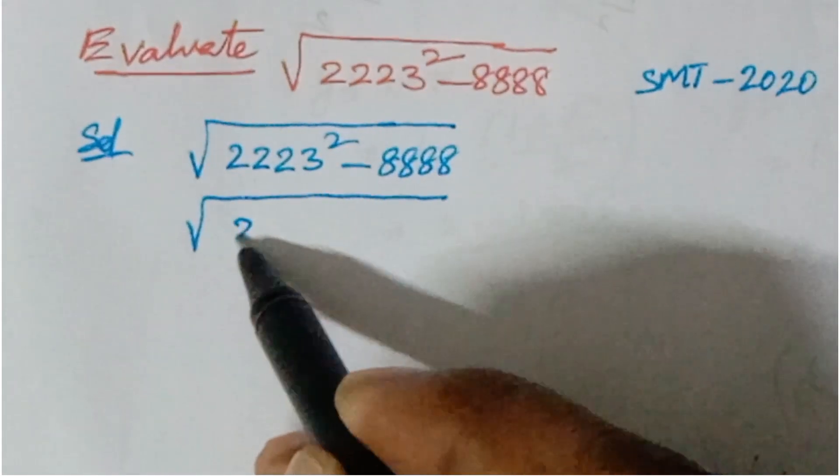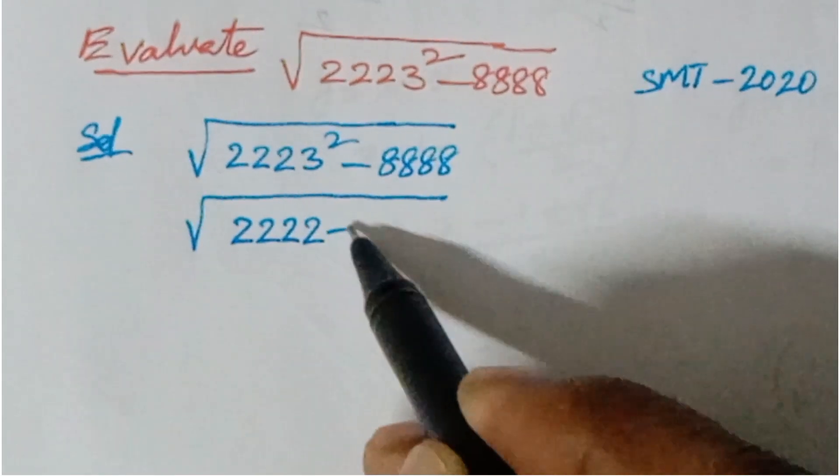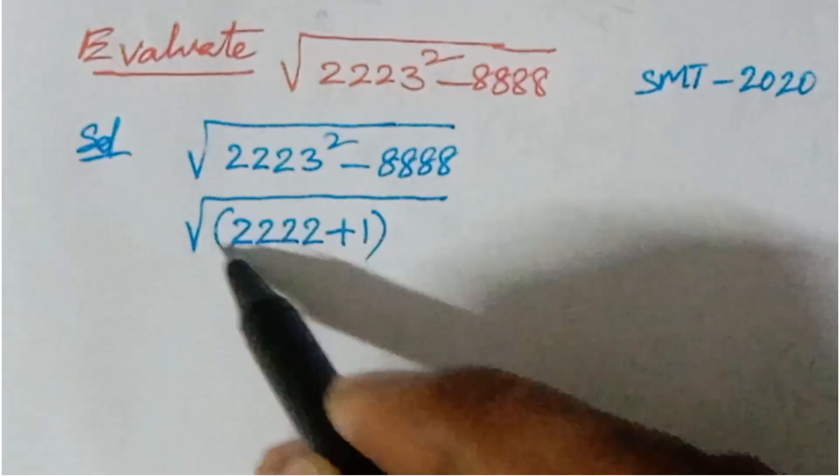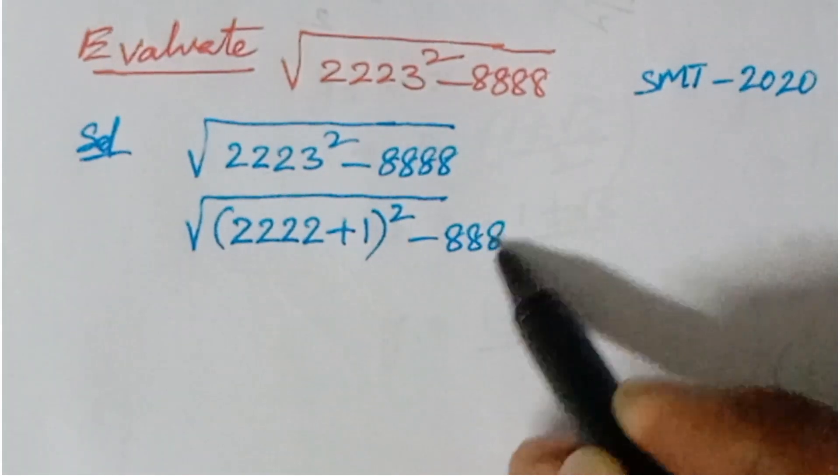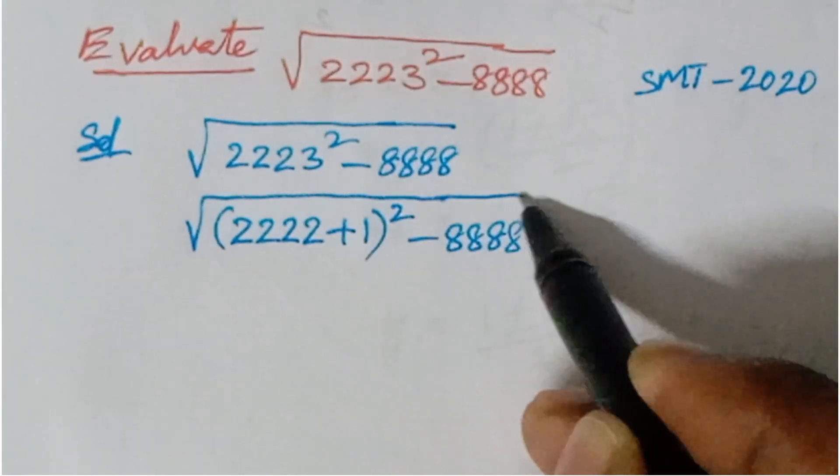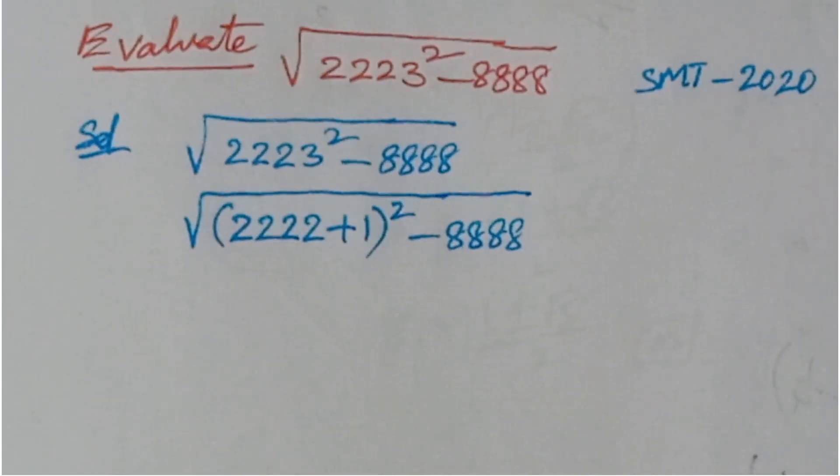So here the first step, what you have to do is, here you have to write 2222 plus 1 whole squared minus 8888. So this is the logic we are having.